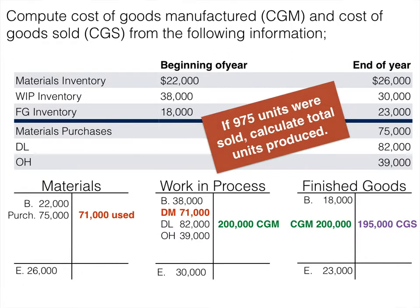Let's take this a step further. If 975 units were sold, how many did we actually produce? I'd like you to pause your player right now and see if you can figure out the answer to this question. Once you find it, come back and we'll look at it together.